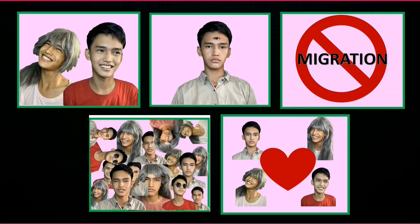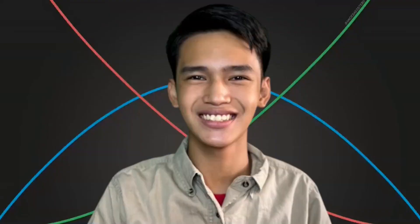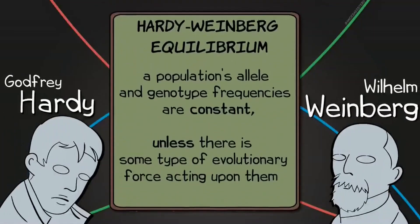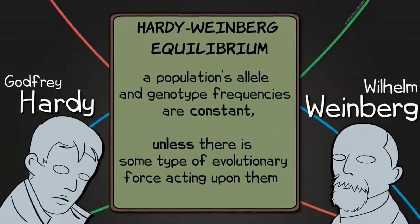And this is according to the Hardy-Weinberg Equilibrium. It got its name from mathematicians Godfrey Hardy and Wilhelm Weinberg. It states that a population's allele and genotype frequencies are constant when there is some type of evolutionary force acting upon them.